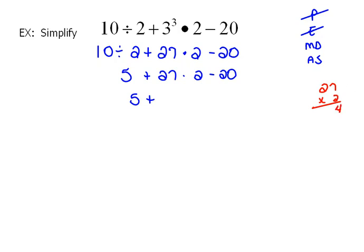So 2 times 7 would be 14. 2 times 2 would be 4 plus 1 is 5. So this would be 54, and then minus 20.